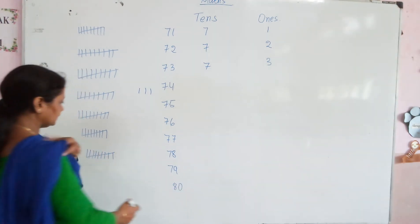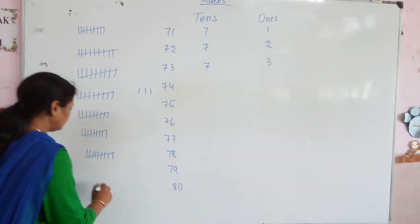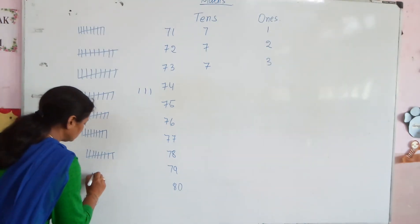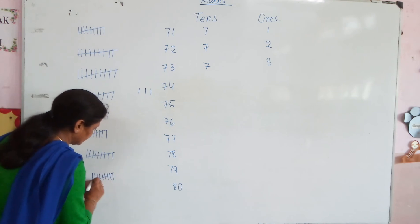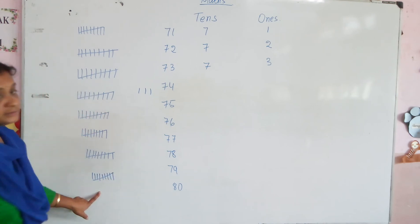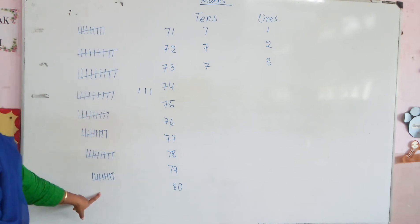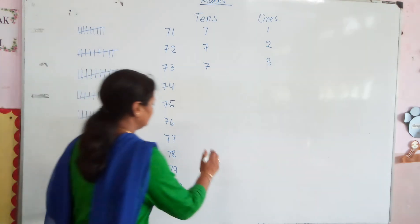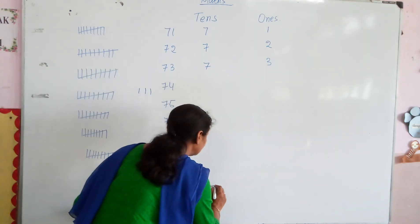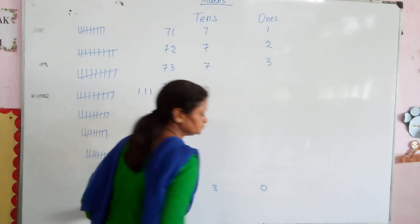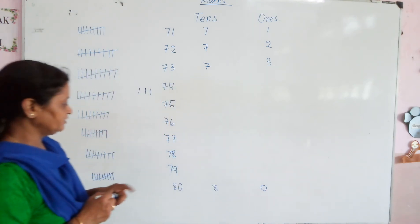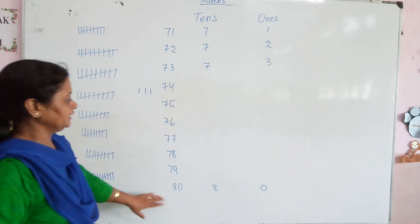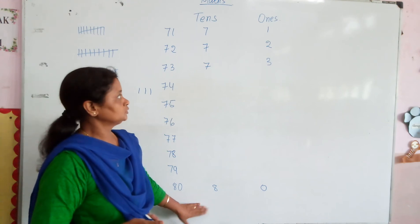Now the last number is 80. So 80 is what? 1, 2, 3, 4, 5, 6, 7, 8, 9, 10 — this is 80, which is 8 tens. You will write 8 in the place of 10s and 0 in the place of 1s. So this is 80, and you will write 80 like this.